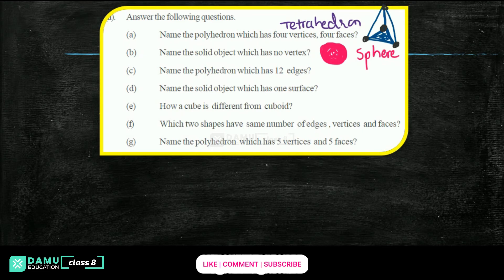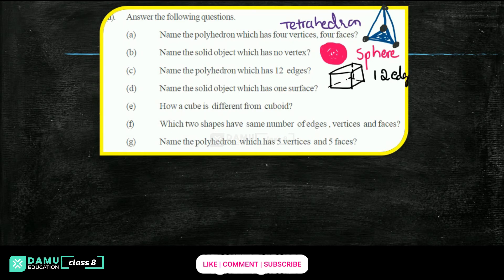Next one: name the polyhedron which has 12 edges. So 12 edges — let's take a cube. Front 4, back 4 equals 8, then surrounding 4 — this is 12 edges. A cube will have 12 edges.